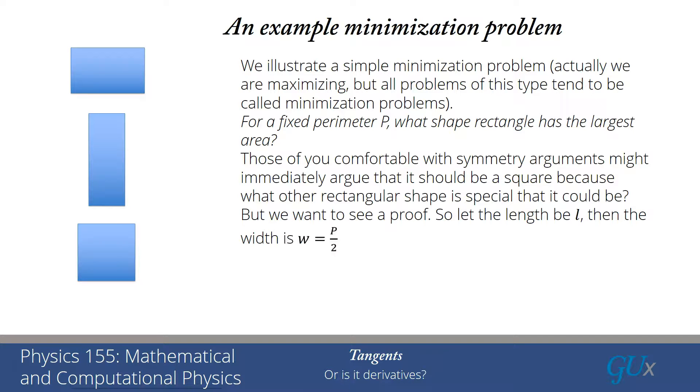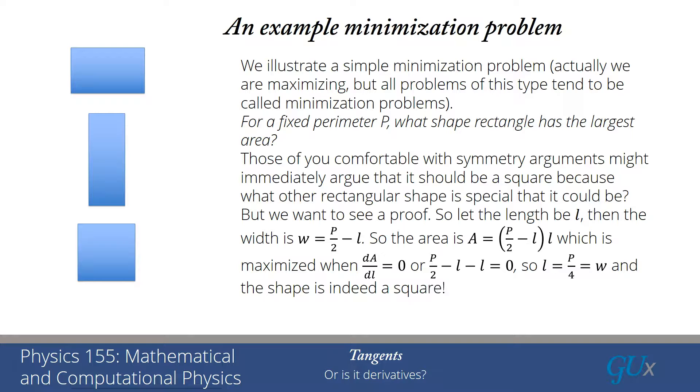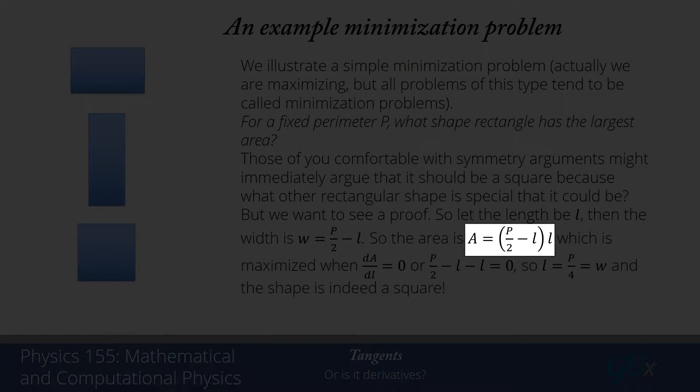So let's let the length of one of the edges, or I'm sorry, the length of the rectangle be l, and then the width of the rectangle will be half of the perimeter minus l. Be sure you understand that because the perimeter is 2l plus 2w. So the area is just the length times the width. So that's going to be p over 2 minus l, which is the width times the length l.